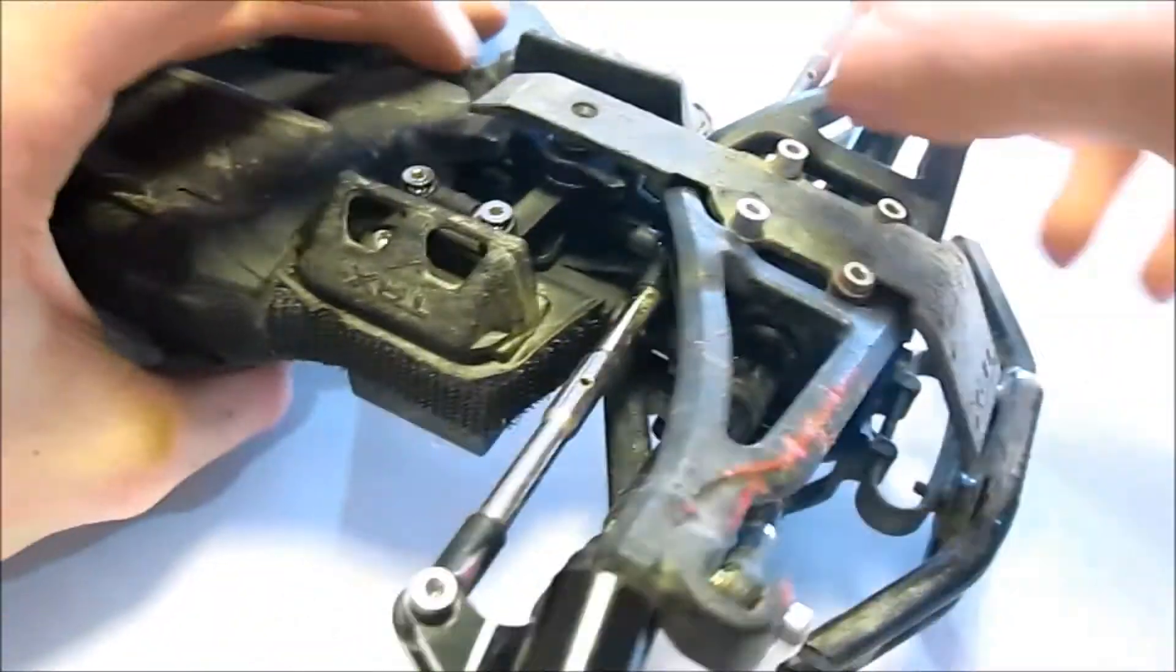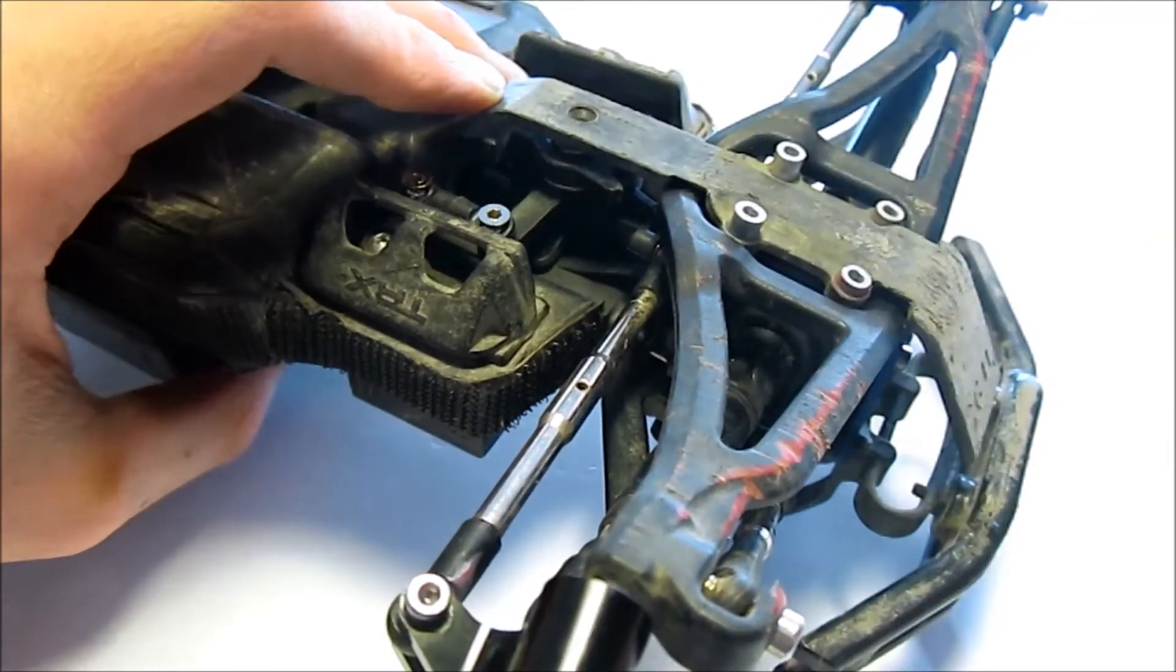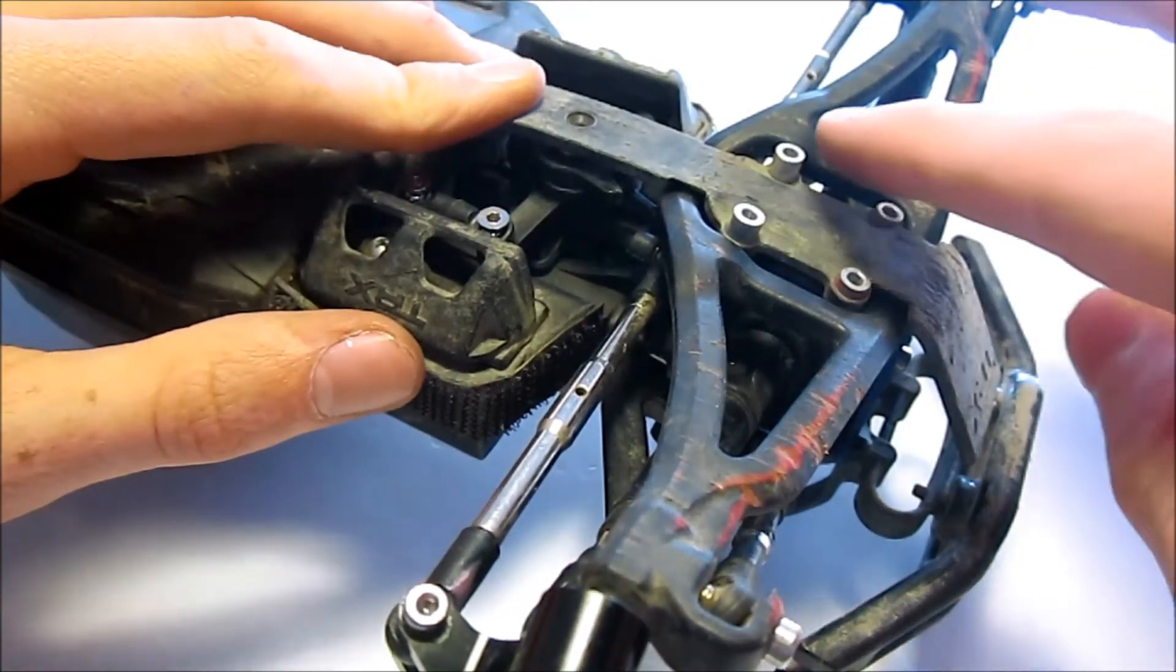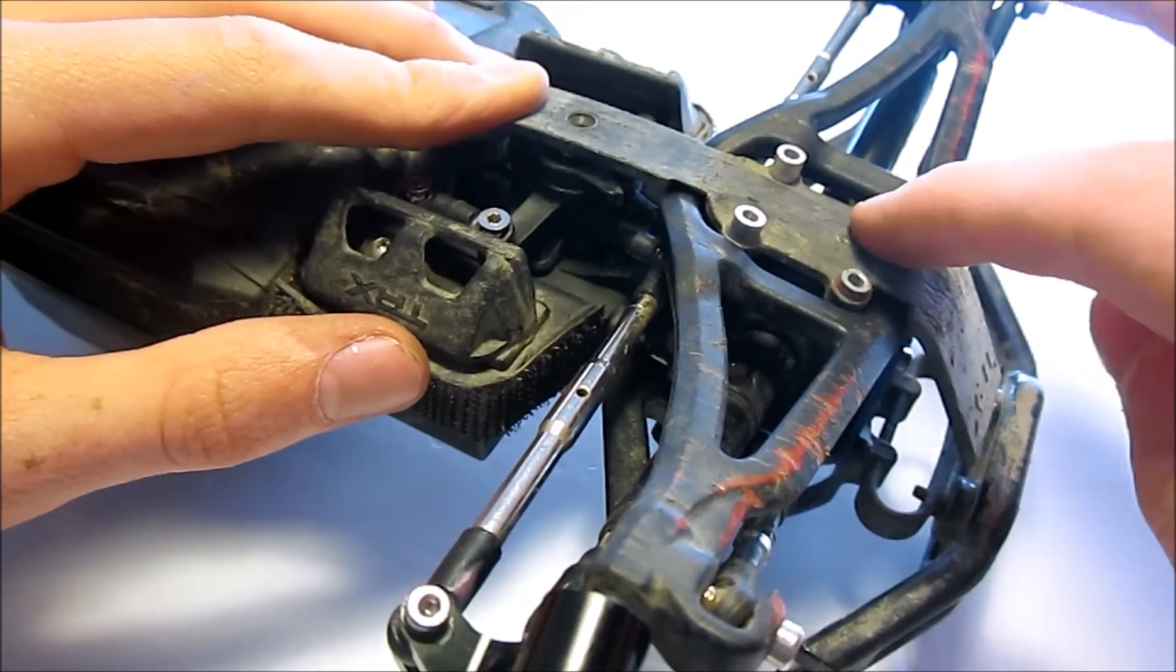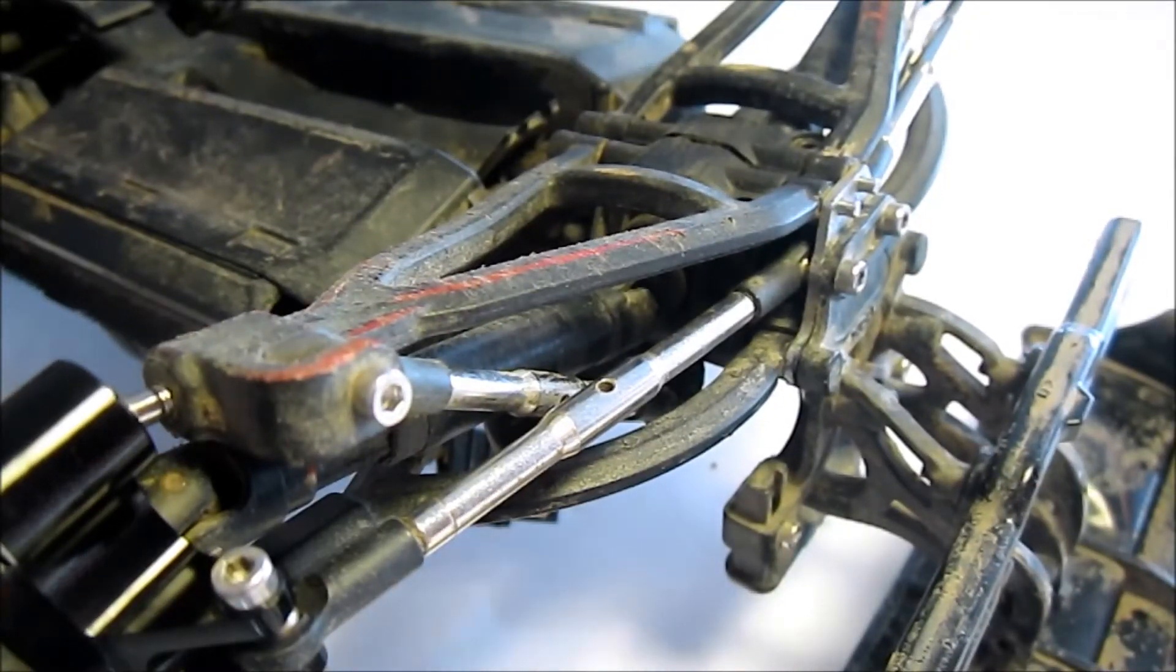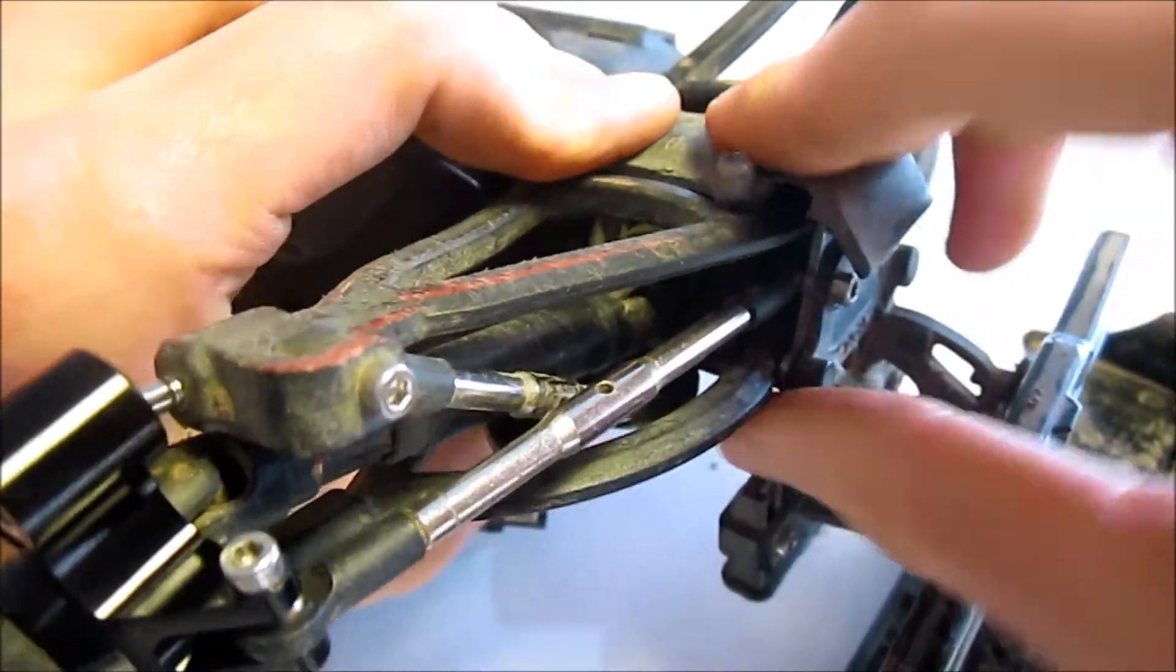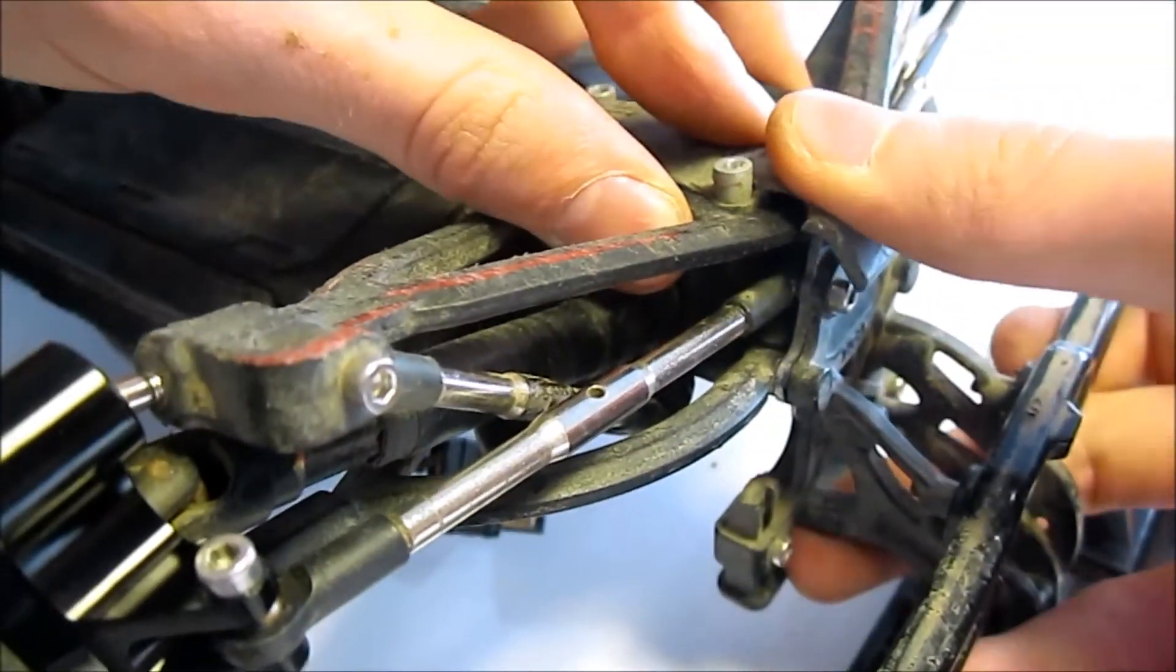Just like that. Now screw in this screw, and if you don't have T-bone, screw in these four screws too. For the rear, just take your skid plate and snap it on. Go over these hinge pins in the back and push it on.